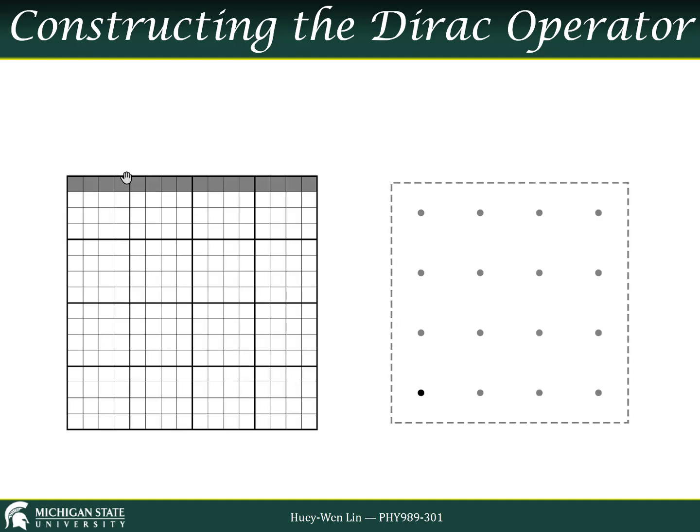If we consider the interaction of the first point with all the points on the lattice, this now fills out the rest of this first row. The interaction of this point with all the other points on the first row, second row, third row, and the fourth row completing the entire lattice.